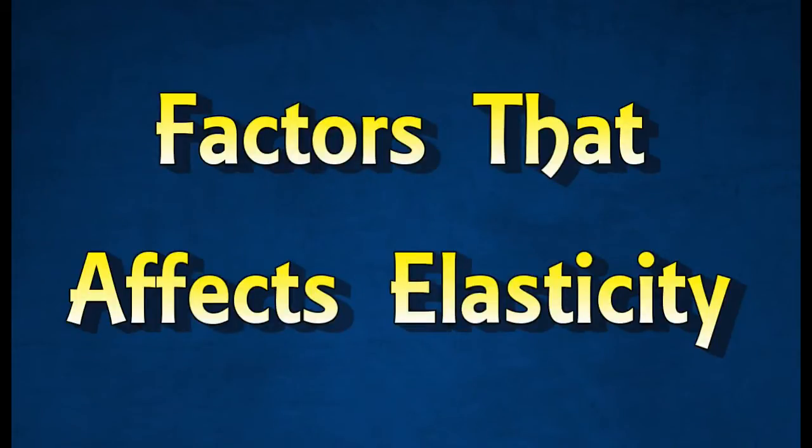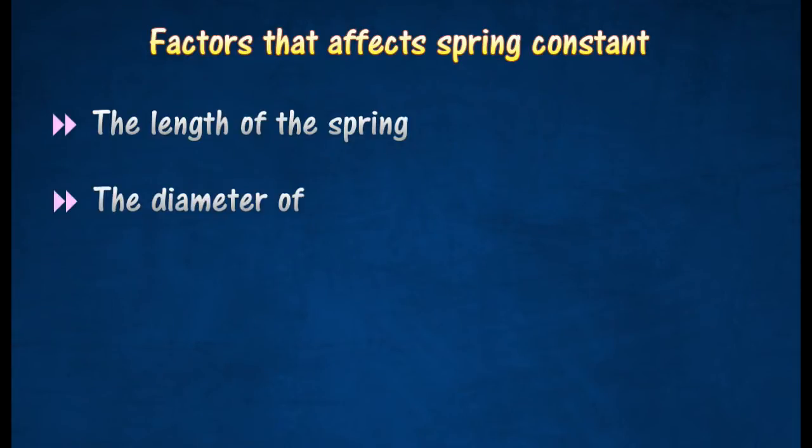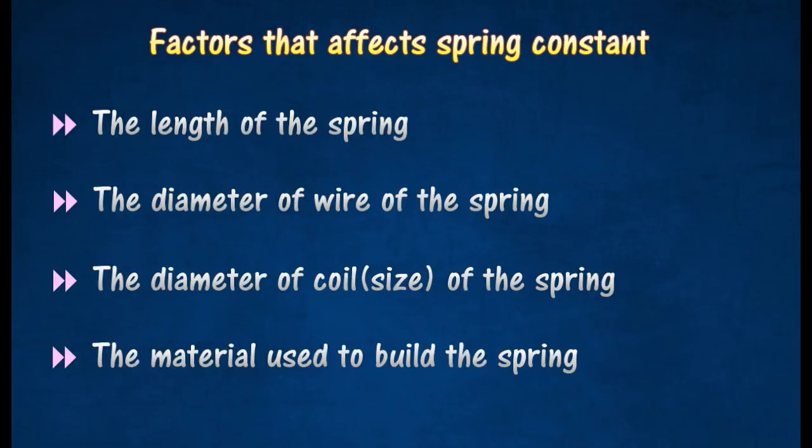Factors that affect elasticity. The elasticity of a spring depends on its spring constant. The spring constant of a spring depends on the length, the diameter of wire, the diameter of coil, and the material used to build the spring.